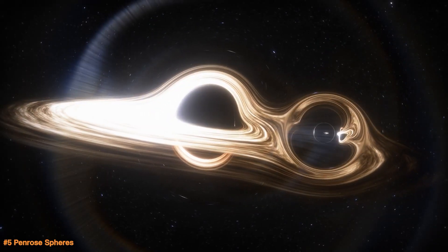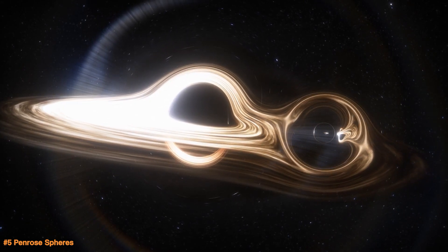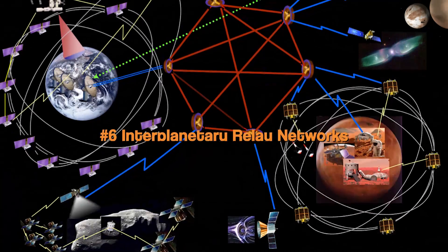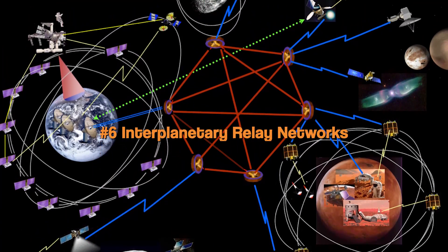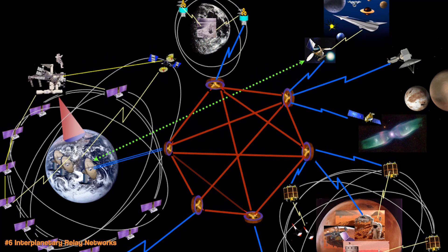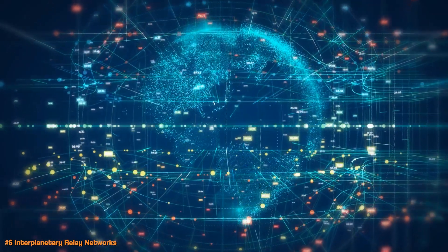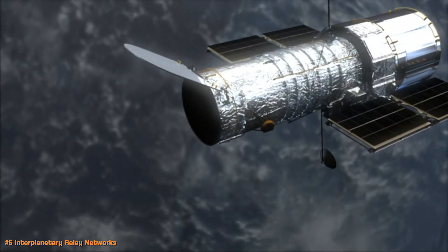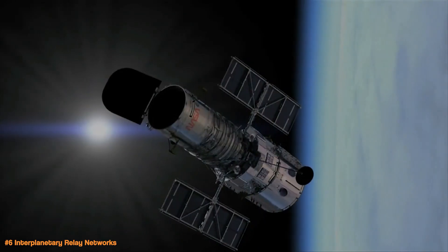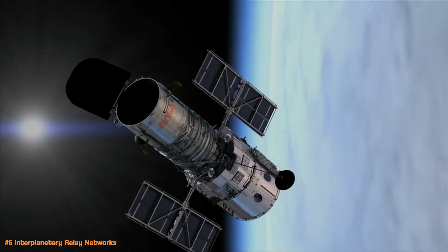But if we want to reach other stars, then we definitely need a way to communicate because texting isn't going to cut it. Interplanetary relay networks are like space communication chains that help send messages between planets, spacecraft, and Earth. Instead of sending signals directly, they use satellites and orbiters to pass the message along step by step.